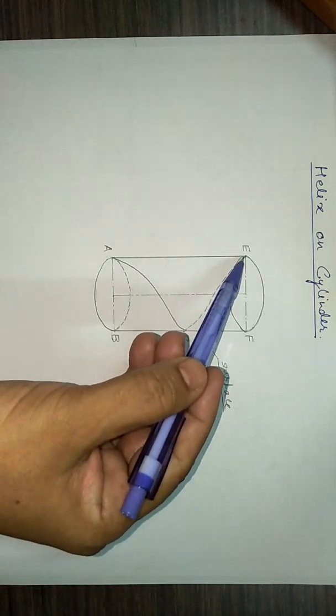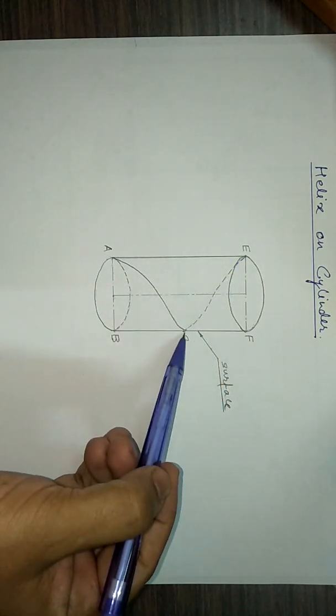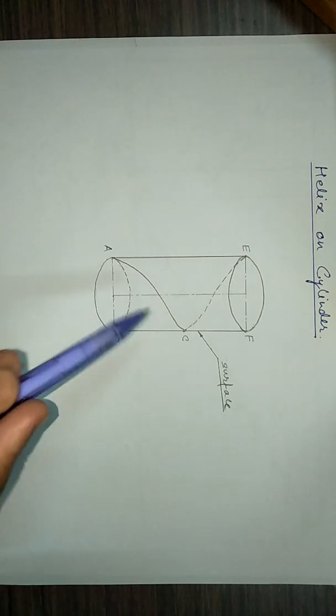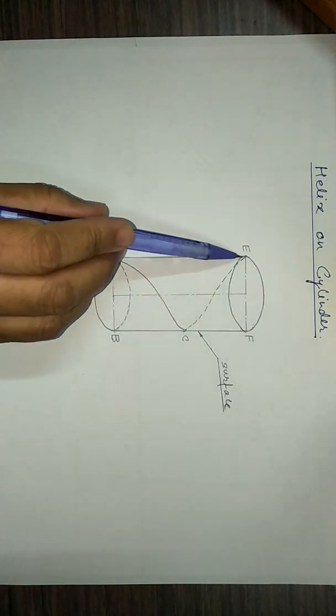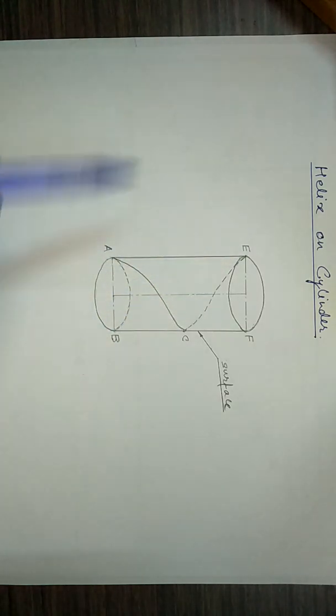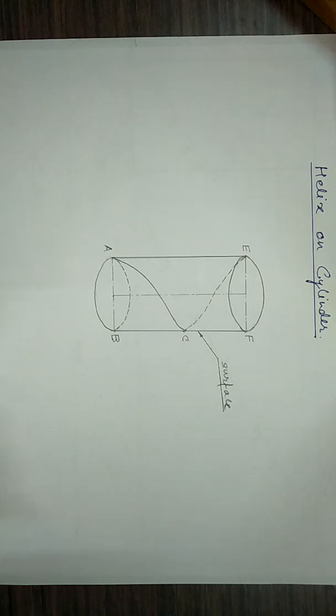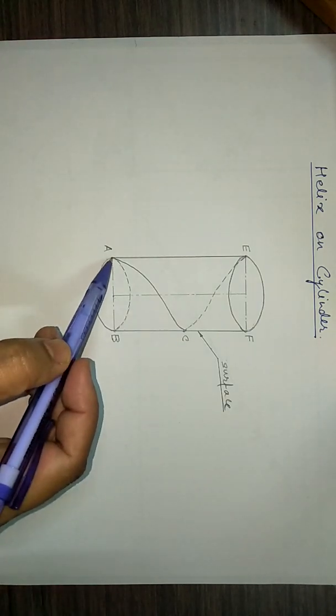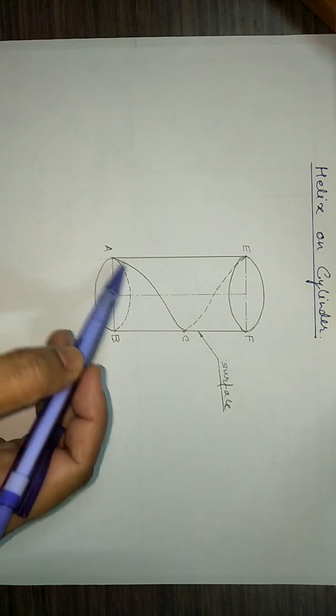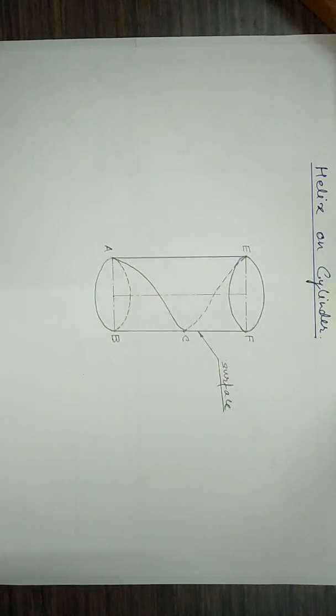This particular portion of the curve CE is the part of the helix which will be formed on the back side of the cylinder which cannot be seen, and hence it is shown by the dotted curve. So this is the helix from A to C and C to E.